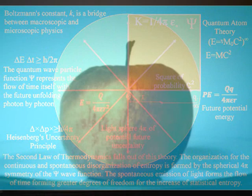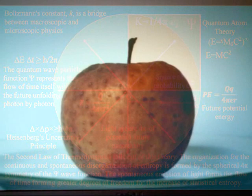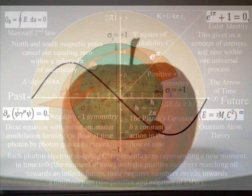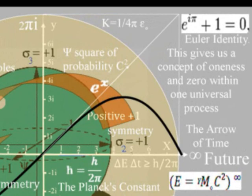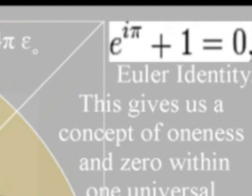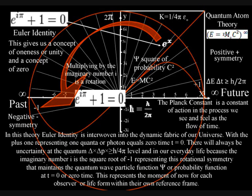In the top right-hand corner of this diagram, we have Euler's identity, the most beautiful equation to come out of the mind of man. But this beautiful equation has no meaning or purpose in modern physics. But in this theory, Euler's identity is interwoven into the dynamic fabric of our universe, with the plus 1 representing 1 photon equaling 0 time, t equals 0, the moment of now. To understand this further, we have to use the next diagram that shows how this spherical symmetry breaks, forming spiral symmetry that has line symmetry for the arrow of time.